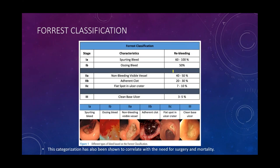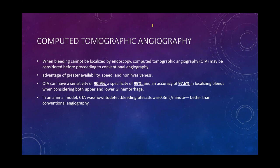Endoscopy colleagues use the Forrest classification to evaluate severity and re-bleeding risk. We don't always see the gross imaging our GI colleagues see on endoscopy, but it's something we can increase our familiarity with, especially with more endoscopy being used in the interventional radiology setting. CT angiography is very sensitive — up to 90% sensitivity, 99% specificity, and 98% accuracy in localizing GI bleeds.